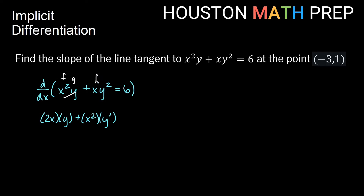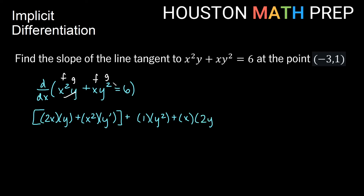For the second term, f is x and g is y squared. So: f prime is 1, leaving g alone gives y squared, plus leaving f alone gives x, times g prime. The derivative of y squared is 2y, but since it's a y term, we multiply by y prime. So that's 2y times y prime — that is our derivative of the xy squared part. Going across the equal sign, the derivative of 6 is 0, since it's just a constant.